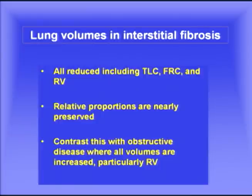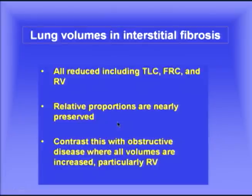Looking at lung volumes in interstitial fibrosis, they're all reduced: TLC (total lung capacity), functional residual capacity, and residual volume. But it's interesting that the relative proportions are nearly preserved — very different from COPD, where typically the residual volume becomes a much higher proportion of the total lung capacity than it should be under normal conditions.